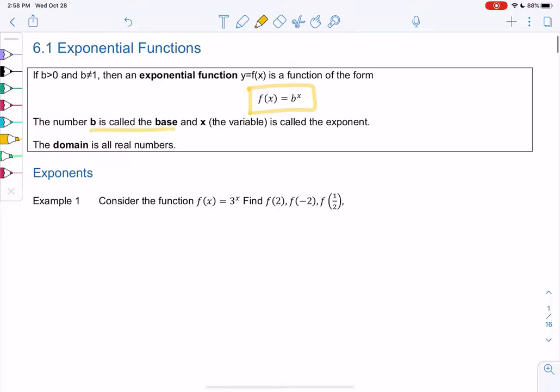We call b the base and x is the variable, which is the exponent. So for exponential functions, the variable is the power. The domain is all real numbers, meaning we can plug any x in.